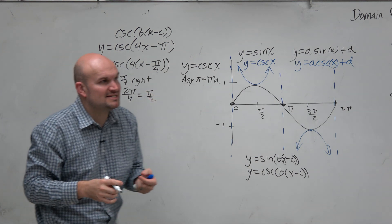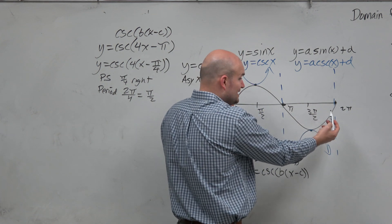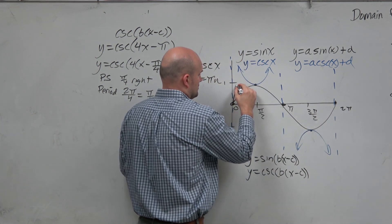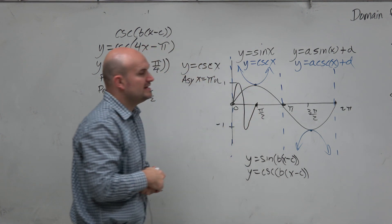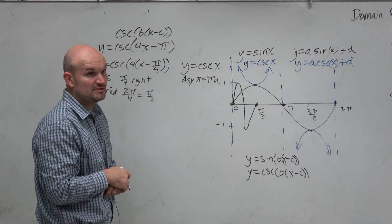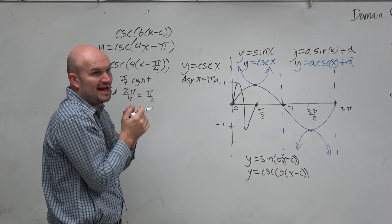So what that means, guys, is again, this graph, instead of it going from 0 to 2 pi to repeat, it now completes its cycle within pi halves. That's what the graph now looks like. It just got compressed from 2 pi to pi halves.